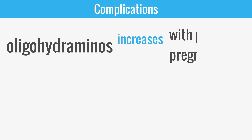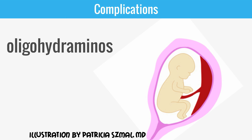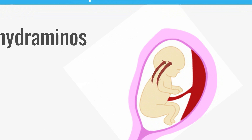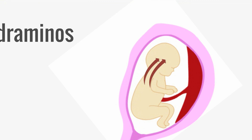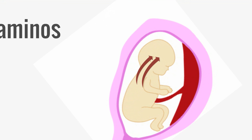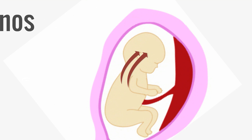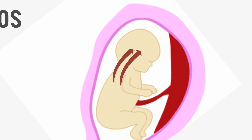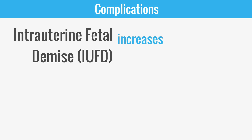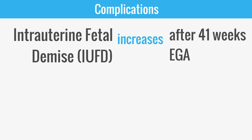Oligohydramnios rates increase with prolonged pregnancies. The fetus will always try to protect blood flow to the fetal brain. When the fetus senses decreased placental flow, it will deprioritize blood flow to the kidneys in order to preserve blood flow to the brain, resulting in decreased urine production. The rates of intrauterine fetal demise increase after 41 weeks estimated gestational age.